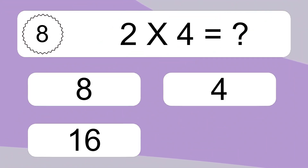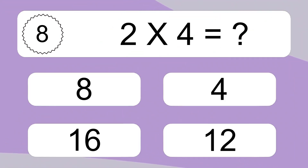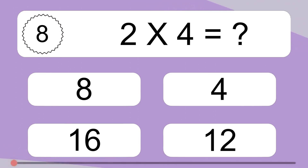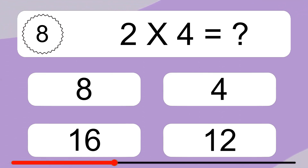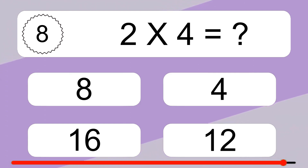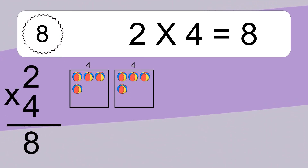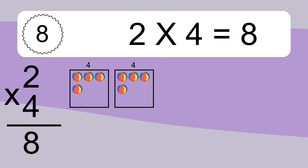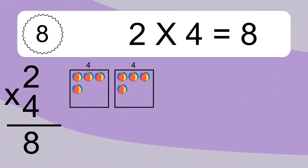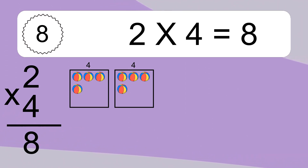2 x 4 equals what? 2 x 4 equals 8. We have 2 boxes and each box has 4 colorful balls inside. If you count all the balls in all the boxes together, you will have 2 x 4 balls. This equals 8 balls.